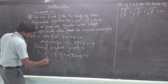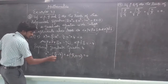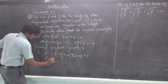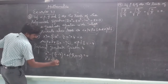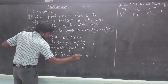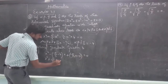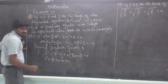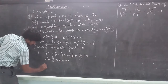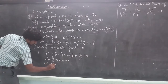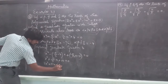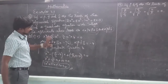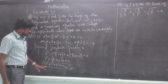Then x squared: taking LCM of 2, we get -8/2 + (-5/2) giving -13/2. Multiplying through by 2: 2x² + 13x + 20 = 0. So this is the required quadratic equation — a simple application of the formula.